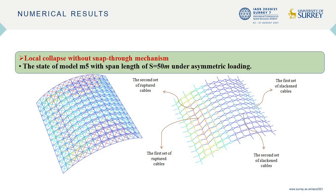After the first and second sets of cables are slackened or ruptured, the structure shows more softening behavior. The structure is able to carry additional load until the second set of cables is slackened. Then the second set of cables reaches a state of rupture, and the remaining structure cannot carry the redistribution of forces due to rupturing and slackening. Therefore, local collapse without snap-through leads to overall collapse.